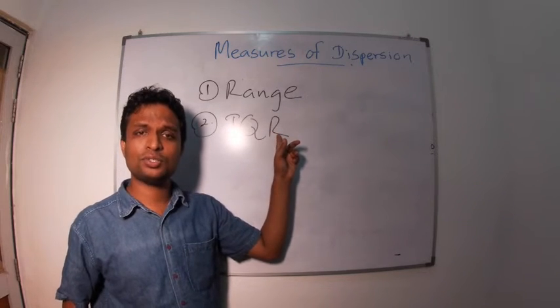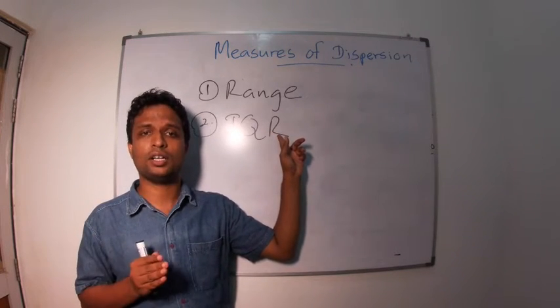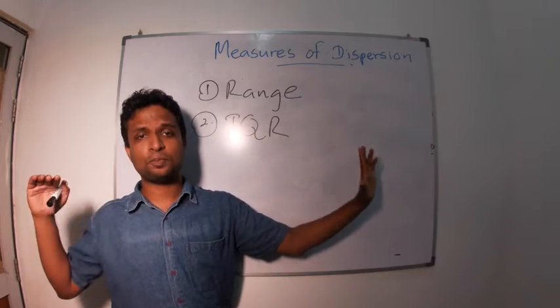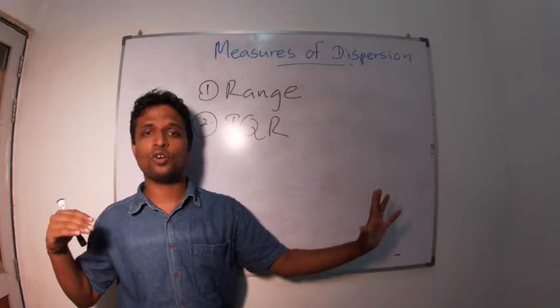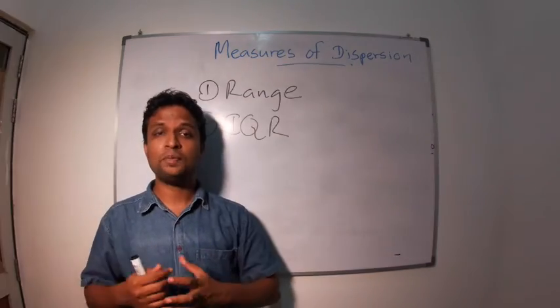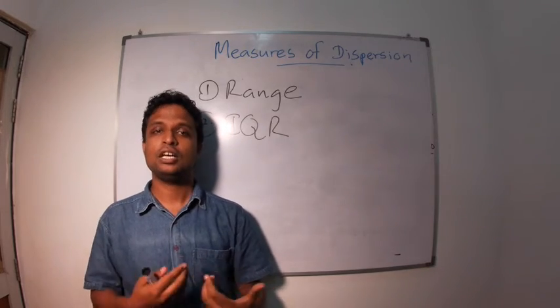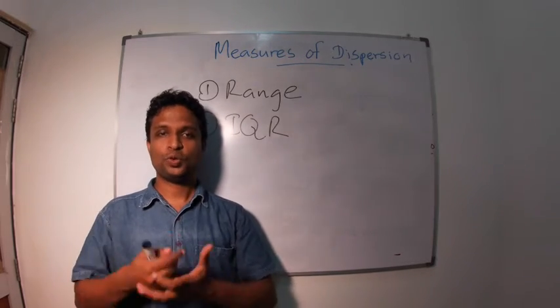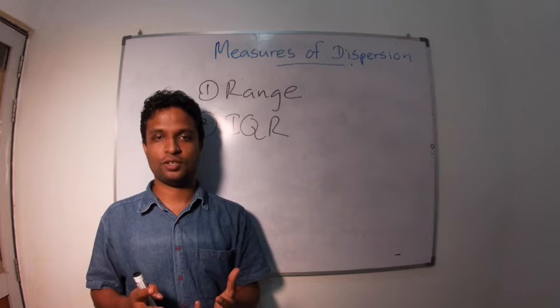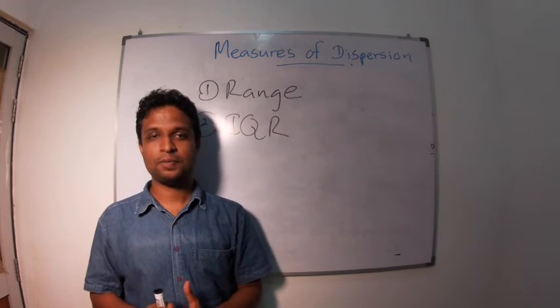In inter-quartile range we use the third quartile and the first quartile to describe the dispersion or distribution of 100 values. It may not truly represent the total dispersion. So we need a measure to describe dispersion by including all the values on distribution.